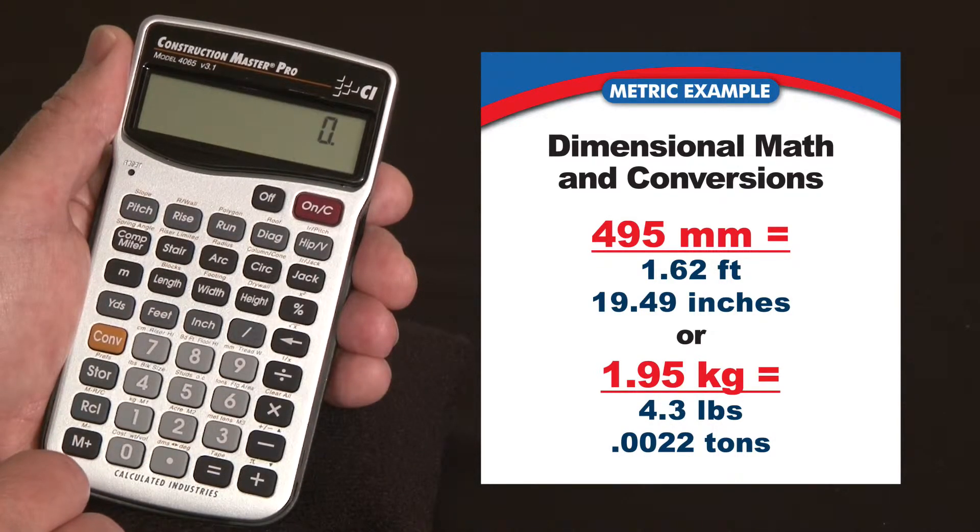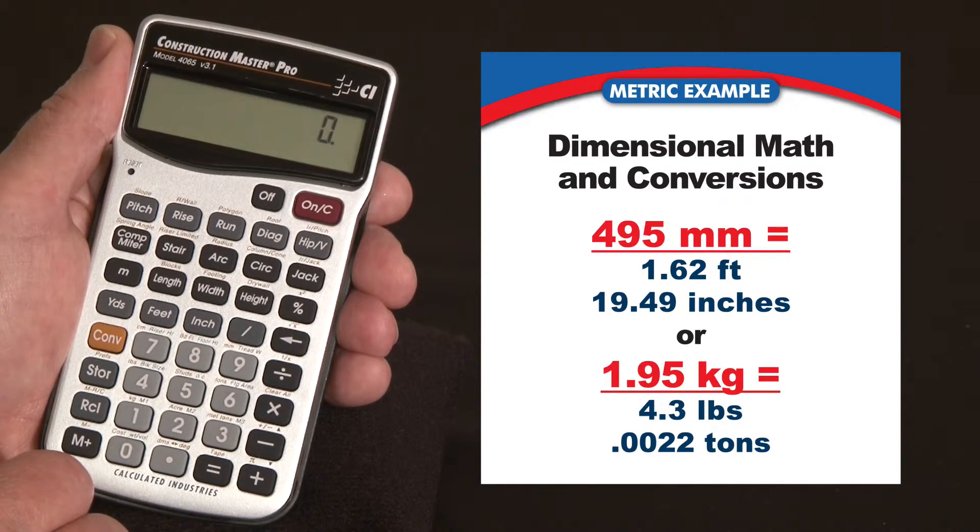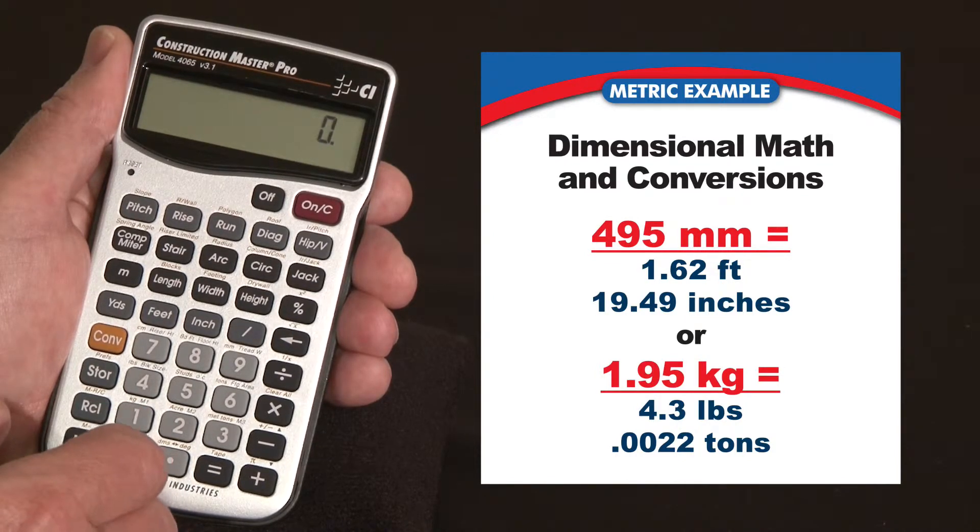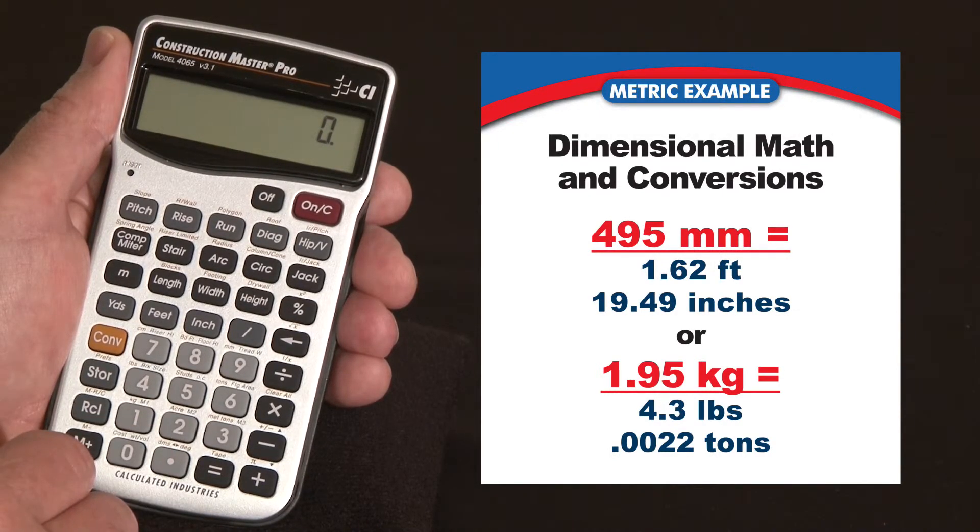There are also conversions for weights: pounds, kilograms, tons, and metric tons, and also weights per volume. So if you have quantities of sand or gravel of different densities, you can calculate the weight based on a stored 1.75 metric tons per cubic meter and do conversions that way as well.